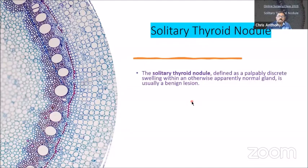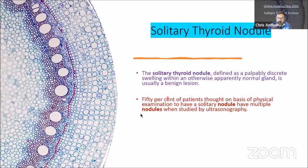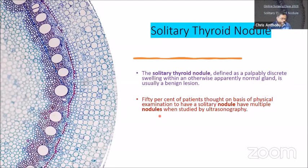A solitary thyroid nodule can be defined as a palpable swelling with an otherwise normal gland — the palpable nodule and the surrounding thyroid is normal. 50% of patients thought on the basis of physical examination to have a solitary nodule — when you look at a patient and on inspection and palpation there's only one nodule — but if you do an ultrasound, actually there are multiple tiny nodules which are not palpable or visible. So 50% of what you see as a solitary nodule is actually part of a multinodular goiter.